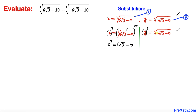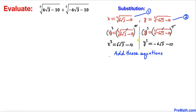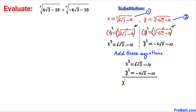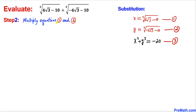Now we add the two cubed equations together. On the left we get x³ + y³. On the right, the 6√3 and −6√3 terms cancel each other out, leaving simply −20. So x³ + y³ = −20, which we call equation 3.